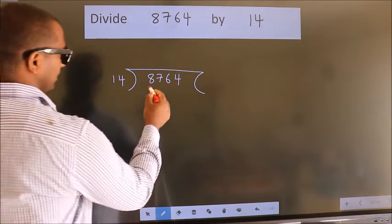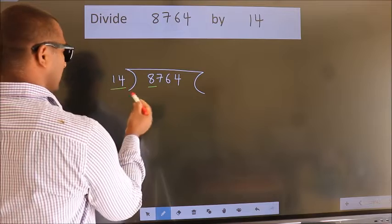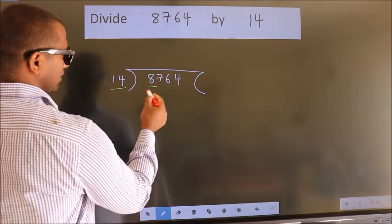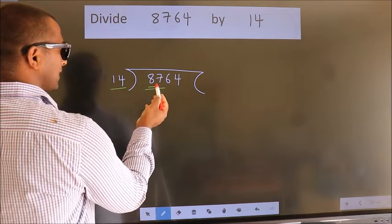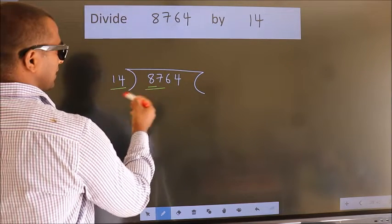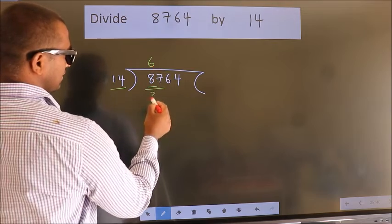Here we have 8, here 14. 8 is smaller than 14, so we should take two numbers, 87. A number close to 87 in the 14 table is 14 times 6, which is 84.